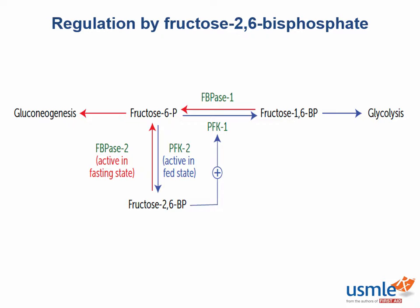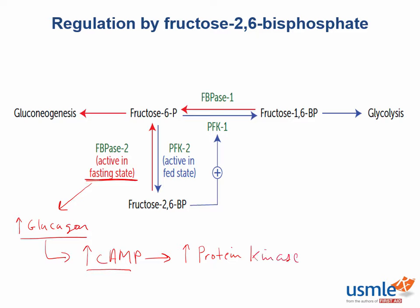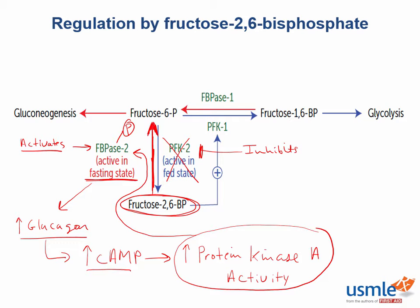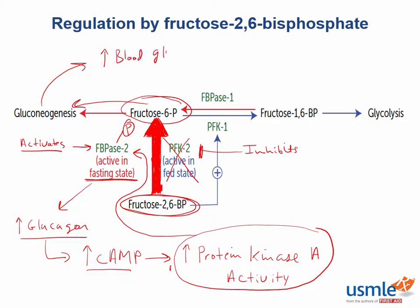Let's compare the regulation of this enzyme in the fed as well as the fasting state. In the fasting state, high glucagon increases the amount of cyclic AMP through a G protein-coupled receptor. This increases the activity of protein kinase A, which phosphorylates fructose bisphosphatase II. This phosphate group activates fructose bisphosphatase II and inhibits phosphofructokinase II, meaning you will be converting fructose 2,6-bisphosphate into fructose 6-phosphate. This in turn allows gluconeogenesis to proceed and replenish blood glucose levels, which makes sense since you are in the fasting state.